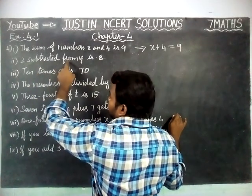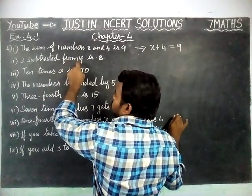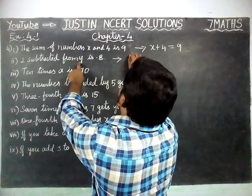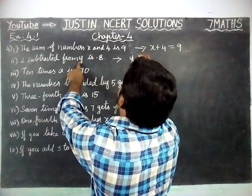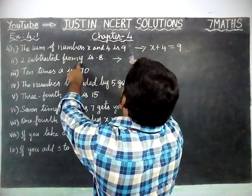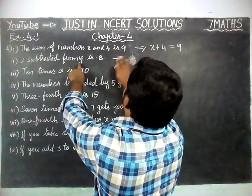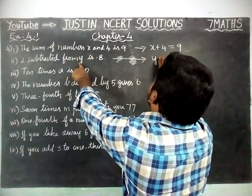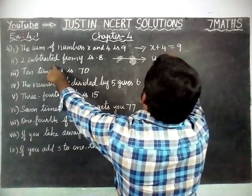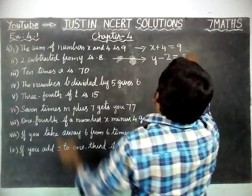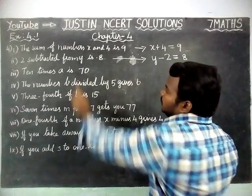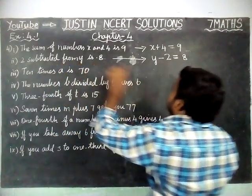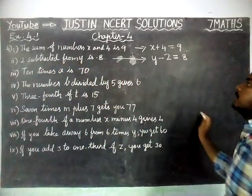Second question: 2 subtracted from Y is 8. We have to write the variable first. So the equation is Y minus 2 is equal to 8. We have written it like this.